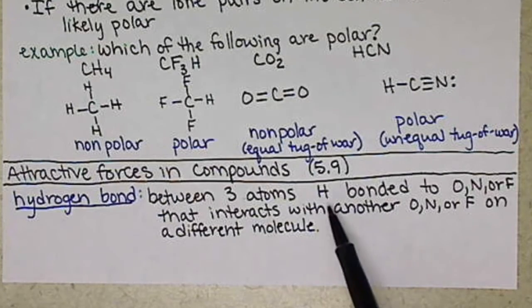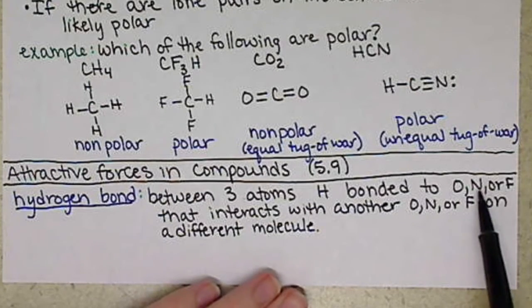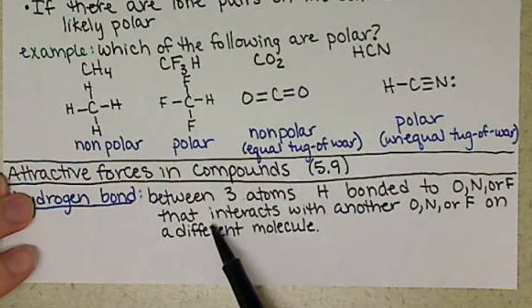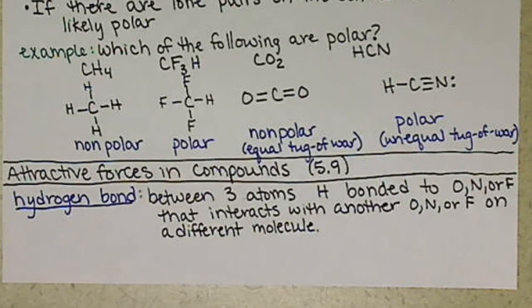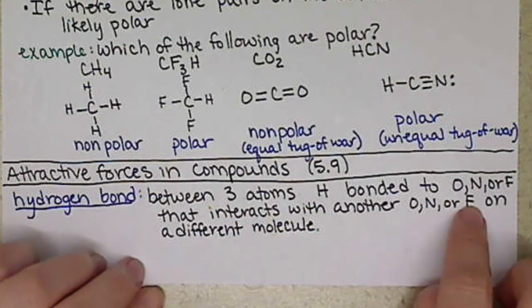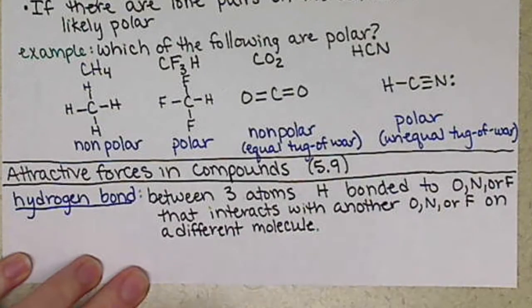We have a hydrogen that's bonded to O, N, or F. Then that hydrogen that's bonded is going to also interact with another oxygen, nitrogen, or fluorine that's on a different molecule that's also bonded to a hydrogen.